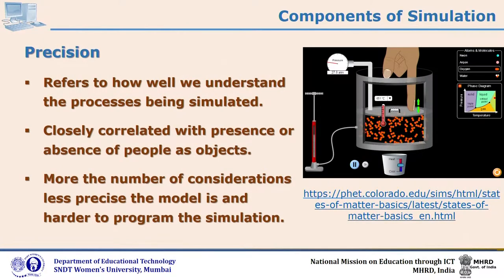Precision is another component. Precision refers to how well we understand the process being simulated — how precisely the entire process is to be simulated. Is there a presence or absence of people as objects? More the number of considerations, less precise the model becomes, and then it is very hard to program the simulation. Here you can see objects such as various states of matter, and as we increase heat, provide a cold environment with ice, or reduce volume by pressing a lever, the state of matter changes. How precisely this happens depends on the program behind the simulation.